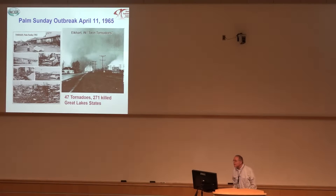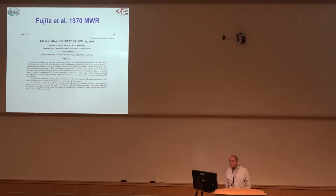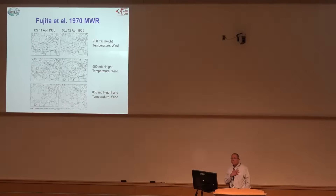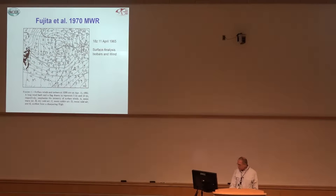Here's an example from Palm Sunday back in 1965 — a lot of tornadoes in the Great Lakes, a lot of fatalities. This was a very seminal paper by Fujita, Bradbury, and Van Thuliner, published in the January 1970 issue of Monthly Weather Review — about 50 pages, a very detailed study — and they included a lot of chart analysis to set the stage, with charts from the morning of the outbreak and at 0Z, 12 hours later, at different levels.